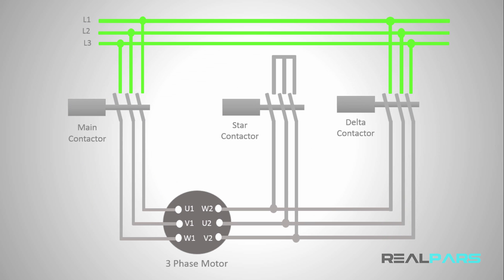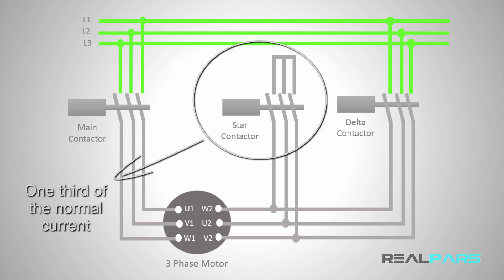One of the common ways to do this is to use a Star Delta Starter for your electrical motor. To do this, you first start the motor in a star connection, and after a few minutes, you'll change the connection to a delta. When you start in the star connection, the current that the motor draws is one-third of the rated current for that motor.